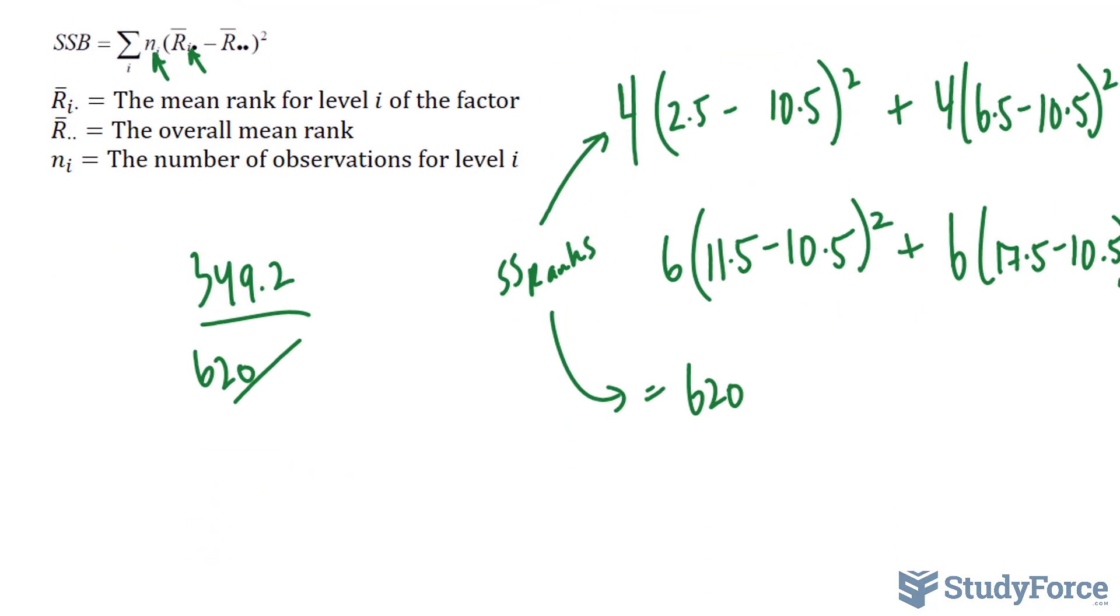and we divide it by n minus 1. So, n is equal to the number of observations, which is 20 minus 1, makes 19. So, the chi-square value is equal to 10.7.